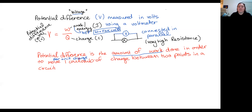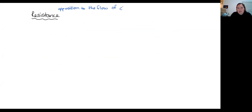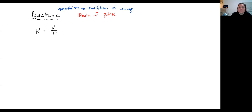So we now move on to the next section, which is resistance. Resistance in an informal definition is an opposition to the flow of charge — if something has a resistance, it's slowing down how fast charge moves. However, our formal equation for resistance is that resistance equals potential difference divided by current. If I had to give a definition, I would say it is the ratio of the potential difference across a component to the current through it.